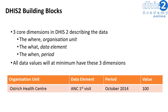This includes the where, which we refer to as the organization unit, the what, which we call the data element, and the when, which is known as the period. Every data value within DHIS2 will have, at minimum, these three dimensions associated with it.